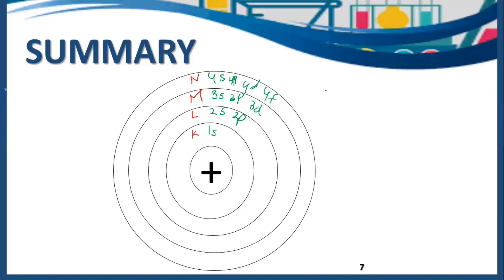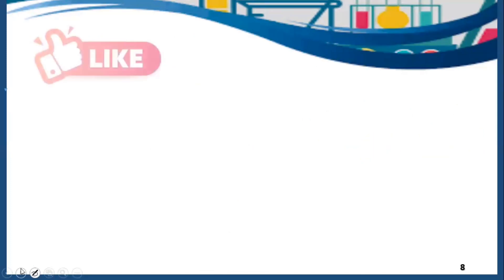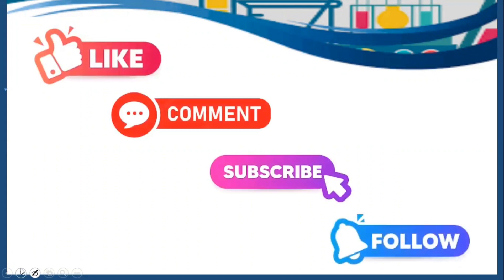Orbitals are named s, p, d and f. In s subshell we have only one orbital, in p subshell we have three orbitals, in d subshell we have five orbitals, and in f subshell we have seven orbitals. These orbitals all have different shapes. This is all about shells, subshells and orbitals. Do like, comment, subscribe and follow this channel for more informative videos. Thank you.